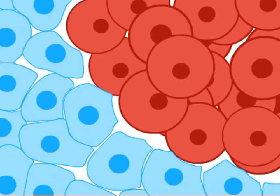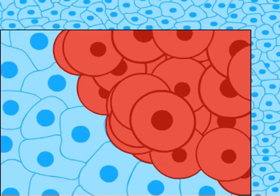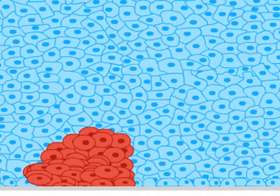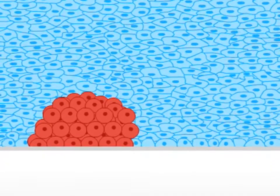However, once confluence is reached, the normal cells will regulate their growth, while the cancer cells continue to divide in an unregulated manner, yielding a clump of cells, which is often called a focus.